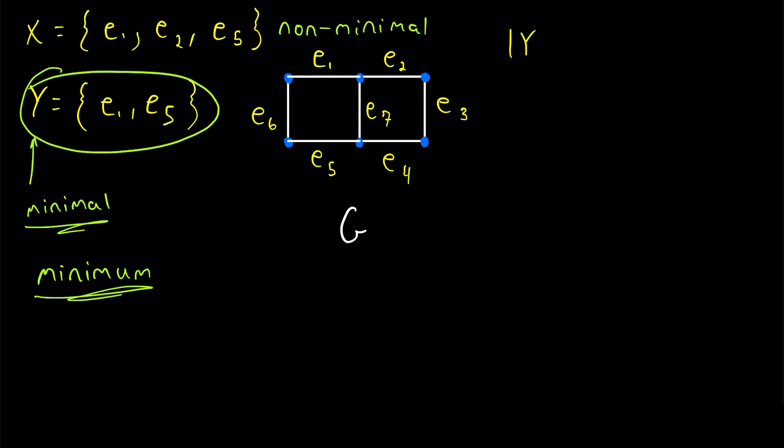So for our graph G, the cardinality of Y, a minimum edge cut, is equal to 2. And this is called the edge connectivity of the graph. So you can think of the edge connectivity of a graph as being the minimum number of edges that we need to delete in order to disconnect a graph. So among all edge cuts in a graph, the one of minimum cardinality, its cardinality is the edge connectivity. And of course, we have notation for this.